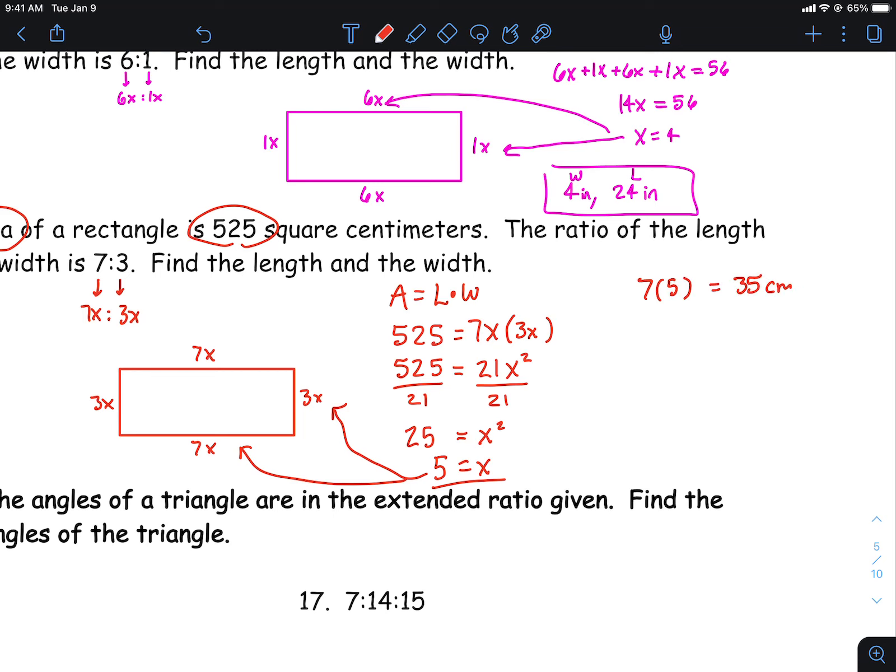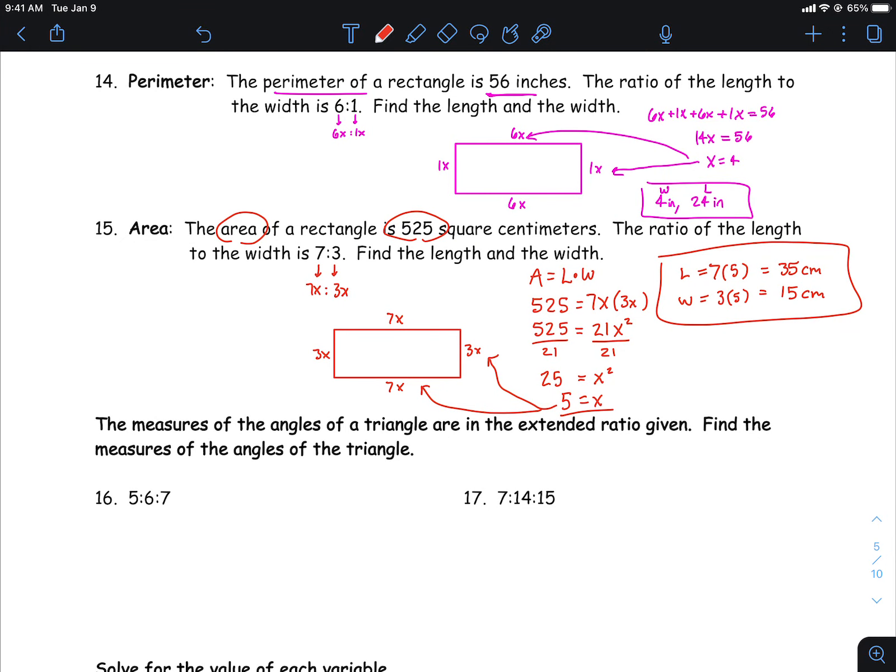35 centimeters, and then the 3 times the 5 right there, that'll be 15 centimeters. And then if you want to just double check, you can go and do 35 times 15, and that does come back out to 525. So there's your length and there's your width.